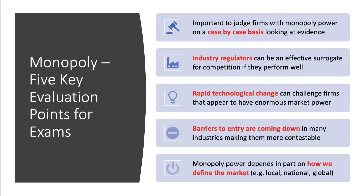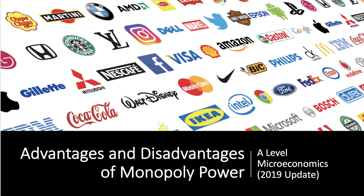Ultimately, high market concentration and monopoly power do not always signal the absence of competition. It can actually just reflect the success of businesses in being the best of breed — the top firms providing better quality products more efficiently at a better price than their rivals. Monopoly power is a big area in Theme 3 microeconomics. Hopefully this has been a useful update — thank you very much.